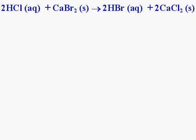In this example, we're trying to determine whether or not an equation is balanced. Here's the equation: 2 HCl in the aqueous phase plus CaBr2 in the solid phase makes 2 HBr in the aqueous phase plus 2 CaCl2 in the solid phase. The only way we can determine whether or not an equation is balanced is to count the atoms on both sides of the equation.